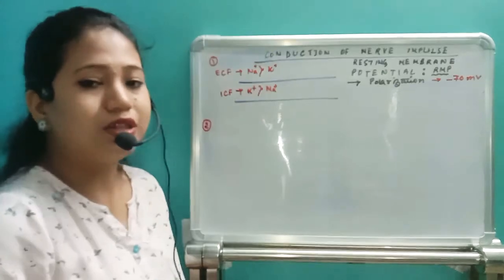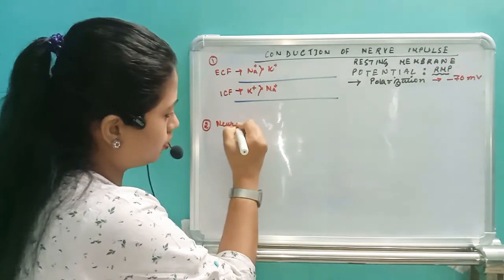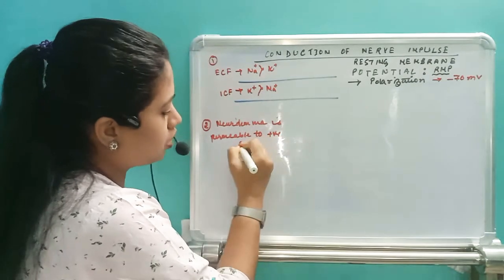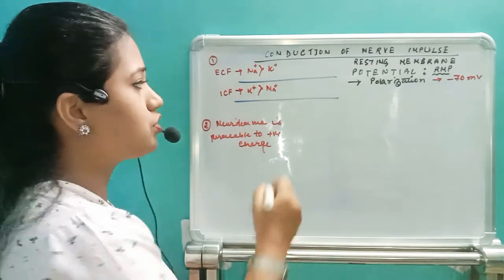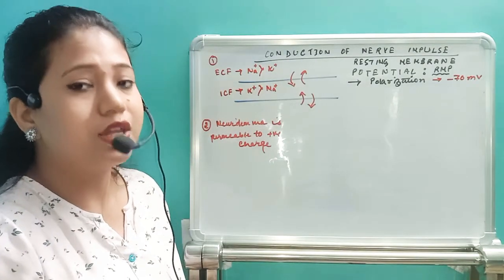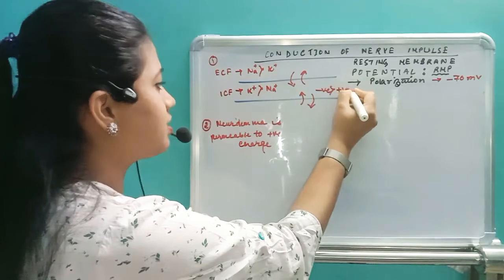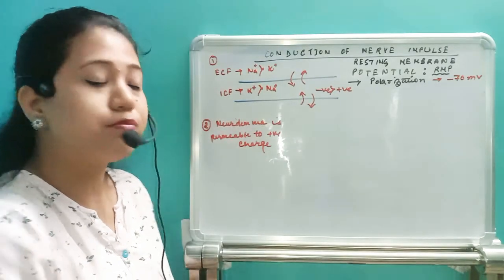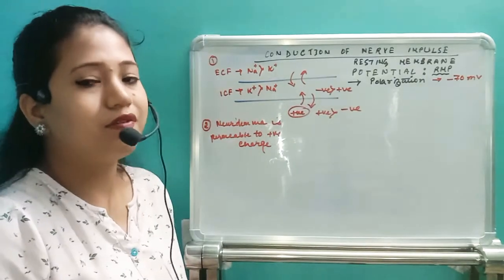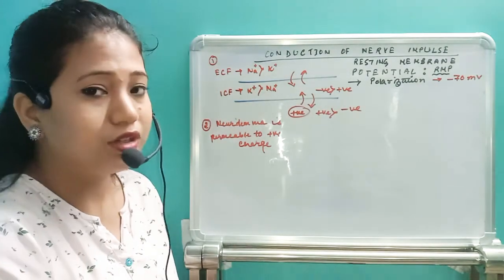The second point: in the case of the neurolemma, the neurolemma is permeable to only the positive charge, not the negative charge. Only the positive charge can enter or exit. No negative charge moves through it. If negative charge is more in the ICF and positive charge is less, that develops a negative charge inside. If positive charge is more than negative charge, a positive charge is developed.